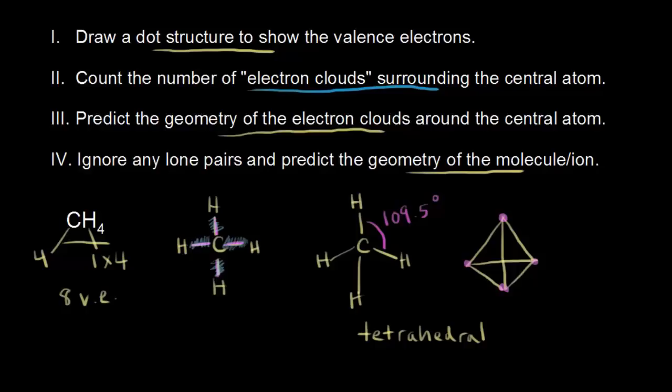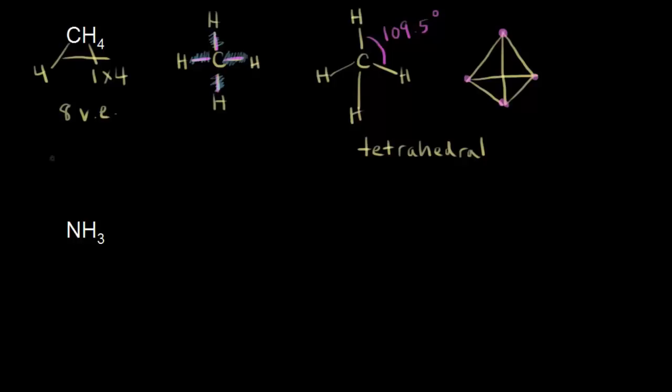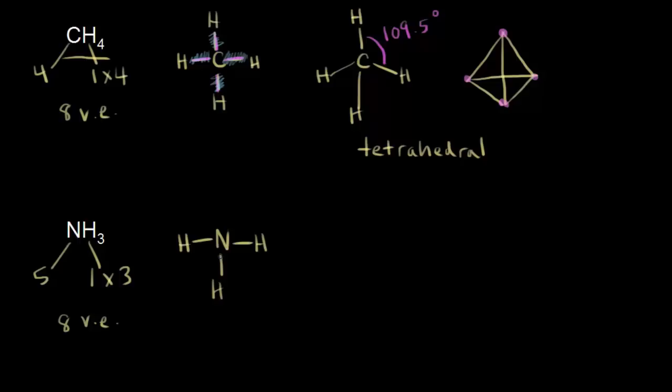Let's do another one — let's look at ammonia, NH₃. First thing we need to do is draw the dot structure, starting with valence electrons. Nitrogen is in group 5, so 5 valence electrons. Hydrogen is in group 1, and I have 3 of them. So 1 times 3 plus 5 is 8 — once again we have 8 valence electrons. We put nitrogen in the center, and nitrogen is bonded to 3 hydrogens, so we put our 3 hydrogens in there.